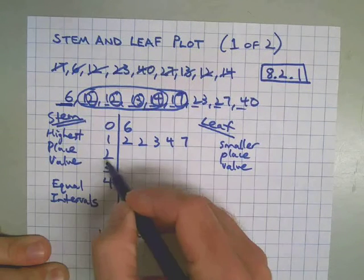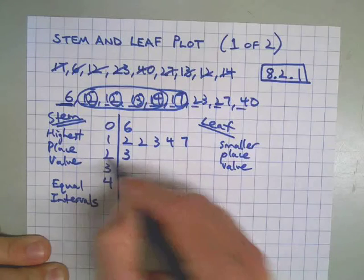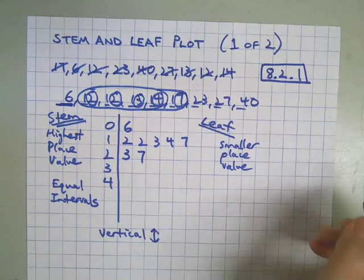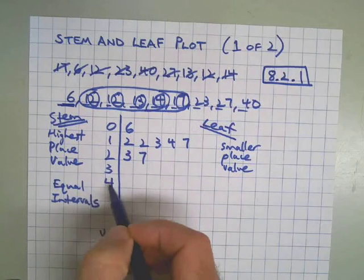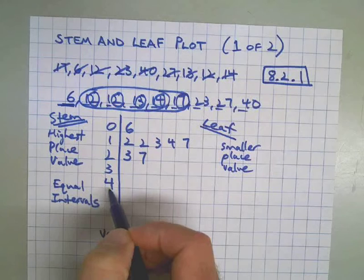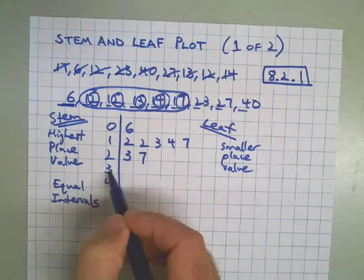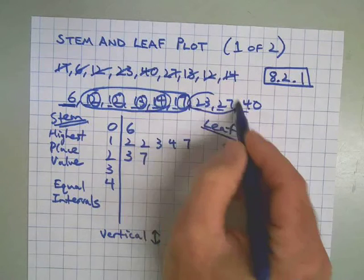On to the 20s, 23, 27. Sometimes if this is confusing, it helps to actually say 10, 20, 30, 40. Then the numbers that these digits represent over here, because this is not 1, 2, 3, 4. This is 10, 20, 30, 40. All right, so that takes care of those two.